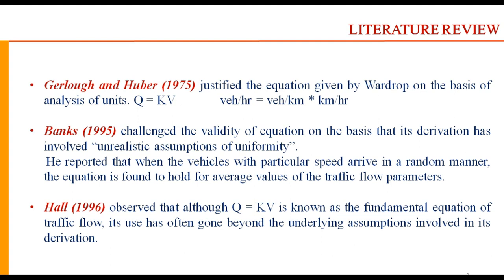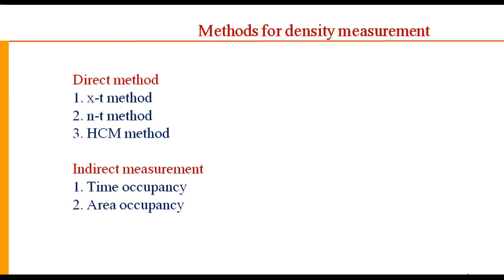To validate this equation you need to collect all three parameters in the field, and today's lecture is on measurement of density under mixed traffic conditions. Measurement of traffic volume and traffic speed is quite straightforward. There are two broad methods of measuring density: direct methods like the XT method, NT method, or Highway Capacity Manual method, and indirect methods such as time occupancy and area occupancy. I'll explain all five methods first and then demonstrate how density is calculated using them.